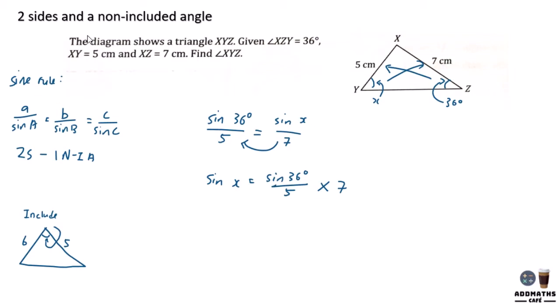So in this case, let's try to get the answer. Sine 36 divided by 5 times 7. This will give you 0.8229 and shift sine, the answer will then give you your final answer.